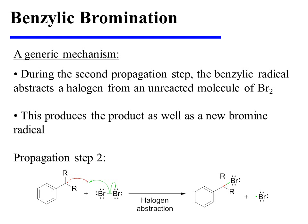During the second propagation step, the benzylic radical abstracts a halogen from an unreacted molecule of Br2. This produces the product along with a new bromine radical.